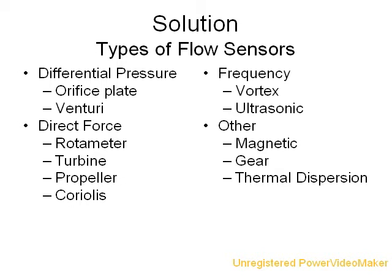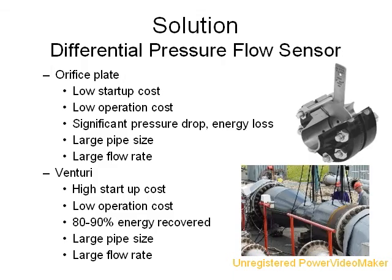Ultrasonic meters require particulates or bubbles in fluid flow that do not exist in this process. For magnetic flow meters, the liquid must be conductive and natural gas is not. Gear meters are able to handle gas, but not in the large quantities required by this process. Because the composition of natural gas varies slightly, a thermal dispersion meter would not be able to be calibrated.